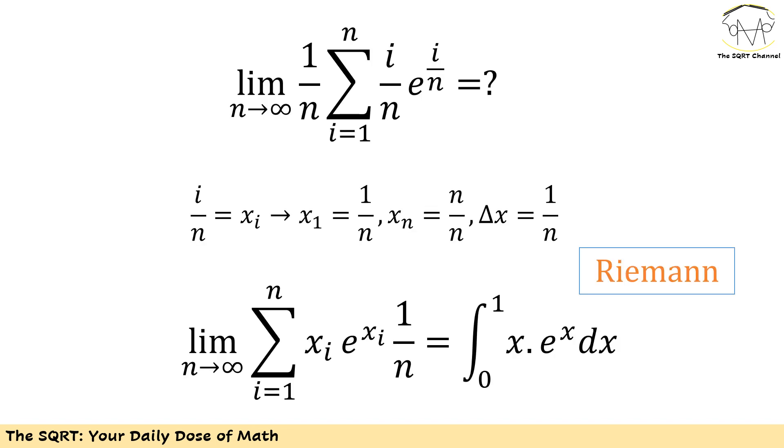Now remember I need to find the sigma of i over n times e to the power of i over n. Let's start with using xi as i over n. Here x1 is going to be 1 over n, xn is going to be n over n, and delta x is going to be 1 over n.